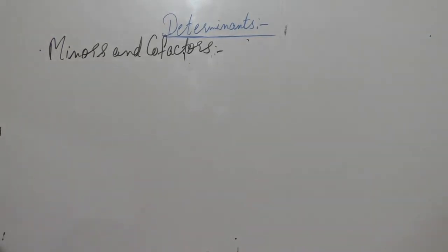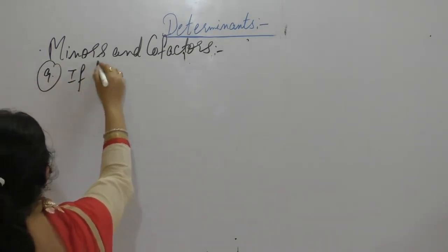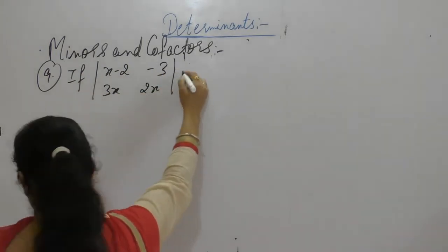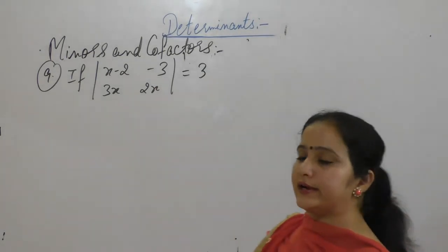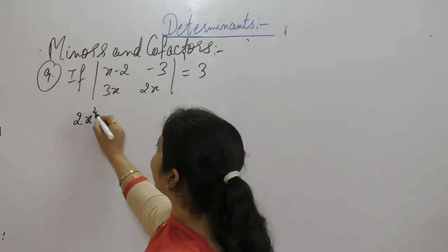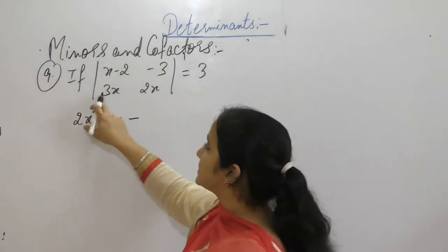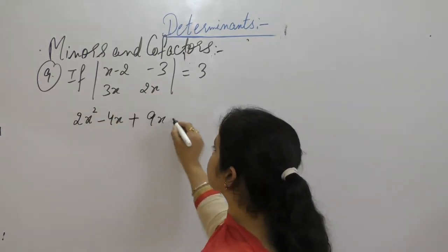Next question, question number 9. If the matrix with elements x, minus 2, minus 3, 3x, 2x has determinant equal to 3, find the value of x. Follow the determinant: 2x into x is 2x squared, 2 into 2 is 4x, minus 3 into 3 is 9x, all equal to 3.